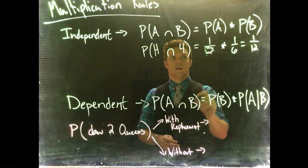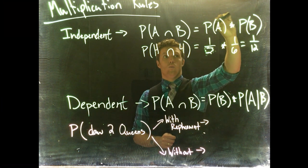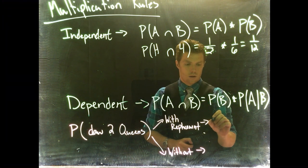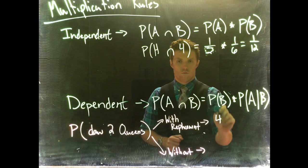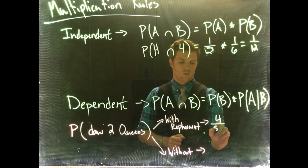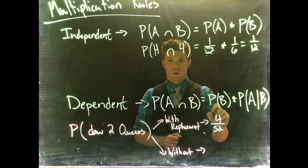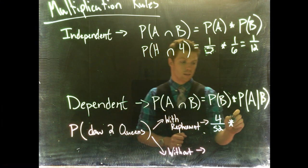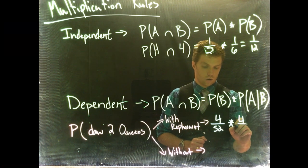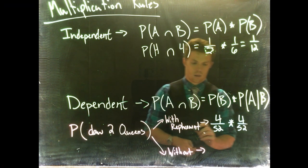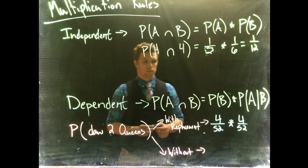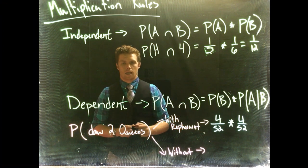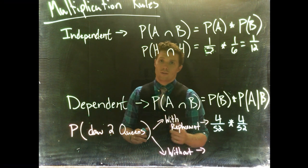With replacement, the probability of drawing two queens would be the probability of drawing one queen multiplied by the probability of drawing another. There are four queens in the deck, so it's four divided by 52, multiplied by four divided by 52 — since we put that card back in — and we calculate that out to get our probability.